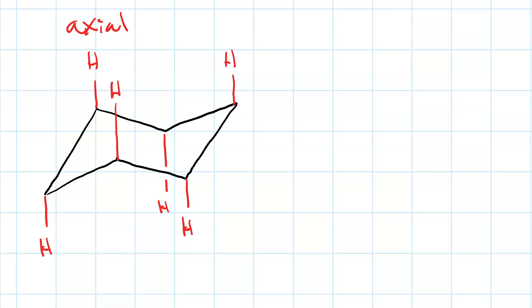There are also six hydrogens in the equatorial positions. This one is up, this one is down. Up equatorial, down equatorial. Up equatorial, down equatorial.